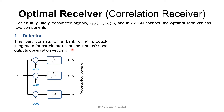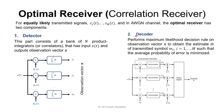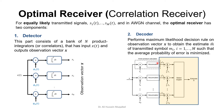The detector has input x(t) and outputs observation vector x. The second part of the optimum receiver is the decoder. This decoder will get the observation vector and make a decision — make an estimate on what was transmitted, m-hat.